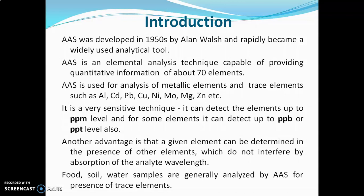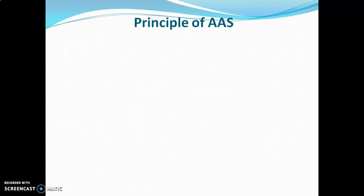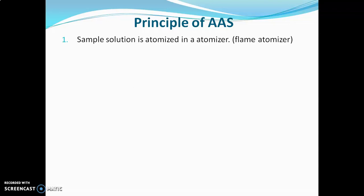In AAS, food, soil, and water samples are generally analyzed for the presence of trace elements. Now we'll go to the principle. The principle of AAS and flame photometry is almost the same but differs at a particular point. The first step involved is that the sample solution is atomized in an atomizer. An atomizer is a part of the AAS instrument which converts a solid or liquid sample into gaseous metal atoms. Many types of atomizers are available, but the most commonly used is the flame atomizer.